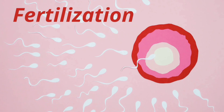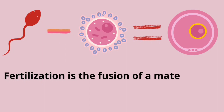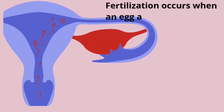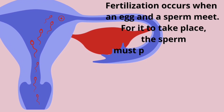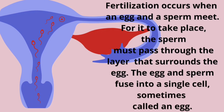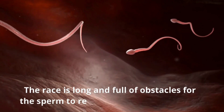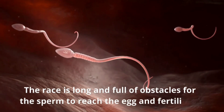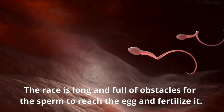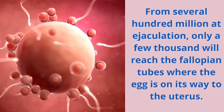Fertilization is the fusion of a maternal egg with a paternal sperm. Fertilization occurs during the meeting of egg and sperm. For it to take place, the sperm must pass through the layer that surrounds the egg. The egg and sperm fuse into a single cell, sometimes called a zygote. The race is long and full of obstacles for the sperm to reach the egg and fertilize it. Fertilization takes place in the outer third of the fallopian tube.